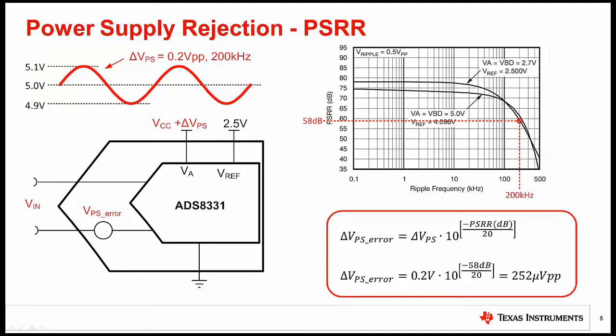Normally, the specification listed in the datasheet table is the PSRR for DC changes in the power supply voltage. For the PSRR over frequency, a Bode plot may be shown in the characteristic curve section. In this example, we can find that the PSRR is 58 dB at 200 kilohertz. Using the PSRR equation introduced earlier, we can determine the error introduced by the power supply rejection.